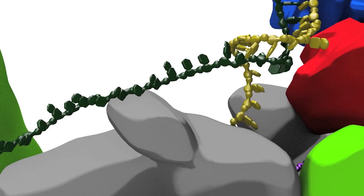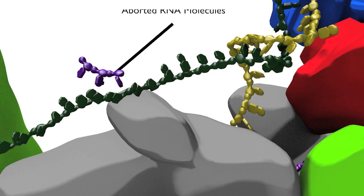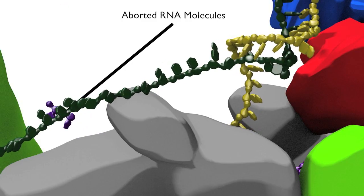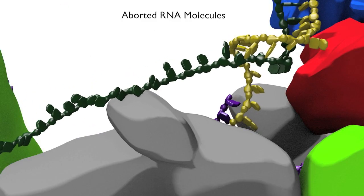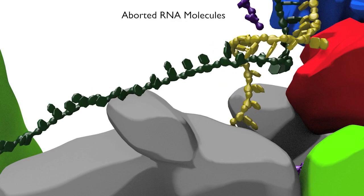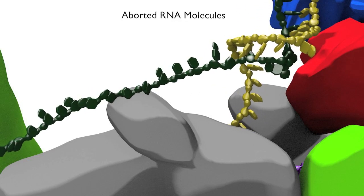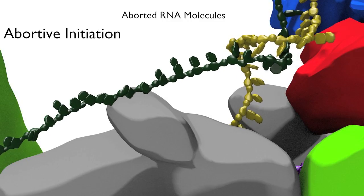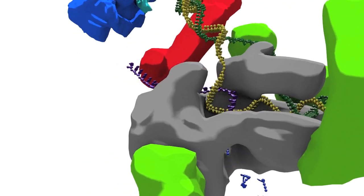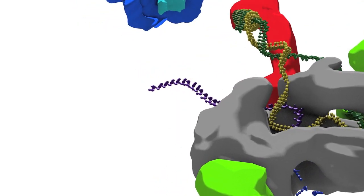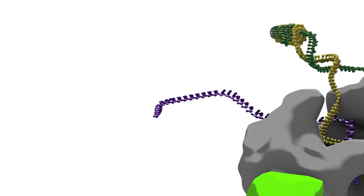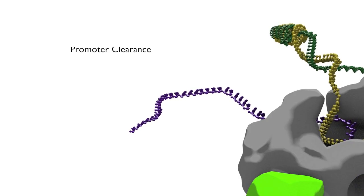Transcription initiation does not go smoothly. RNA polymerase typically will start to synthesize the RNA, but the RNA product will diffuse away after reaching a length of just a few base pairs, and the whole process of synthesis starts again. This process is known as abortive initiation. After multiple rounds of abortive initiation, RNA polymerase breaks free of the promoter and continues to synthesize the RNA in a more persistent way, in a phase called promoter clearance.